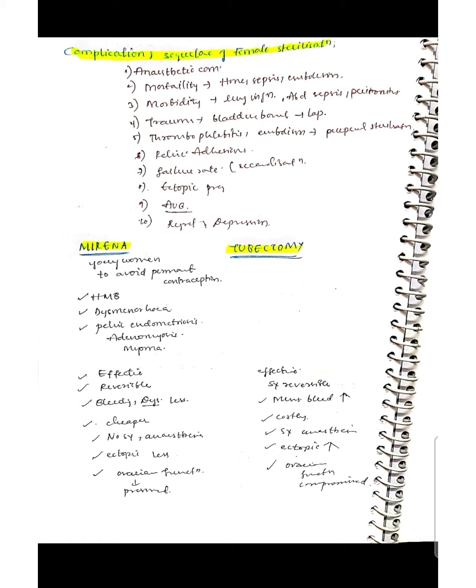Mirena can be used in young women to avoid permanent contraception. Indications for Mirena include heavy menstrual bleeding, dysmenorrhea, pelvic endometriosis, adenomyosis, and myoma. Mirena and tubectomy are equally effective contraceptives. Mirena is reversible while tubectomy is only surgically reversible. Bleeding and dysmenorrhea are less with Mirena. Mirena is cheaper; tubectomy is costlier and carries surgery and anesthesia risks. Ectopic pregnancy risk is less with Mirena but can increase with tubectomy. Ovarian function is not compromised with Mirena but can be compromised with tubectomy.